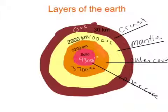Layers of the Earth: the Earth's layers are crust, mantle, outer core, and inner core. The crust is 0 degrees Celsius and 30 kilometers. The mantle is 1,000 degrees Celsius and 2,900 kilometers. The core is 3,700 degrees Celsius and 5,200 kilometers. The inner core is 4,300 degrees Celsius and it's solid. And those are the layers of the Earth.